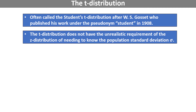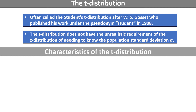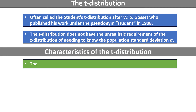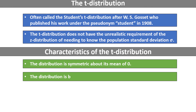In most respects, the t-distribution is very similar to the z-distribution, but there are a few key differences. Here are the characteristics of a t-distribution. The distribution is symmetric about its mean of zero, just like the z-distribution. The distribution is bell-shaped, but the tails are thicker than the z-distribution, making extreme values slightly more common.